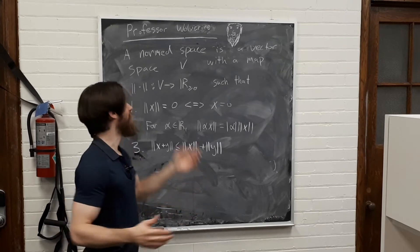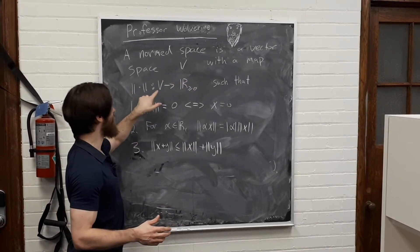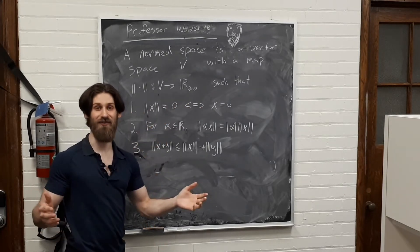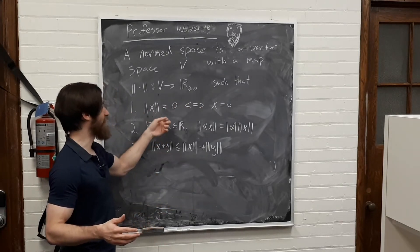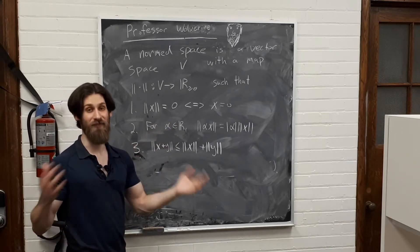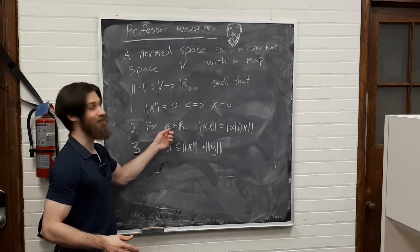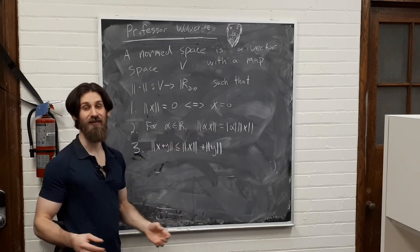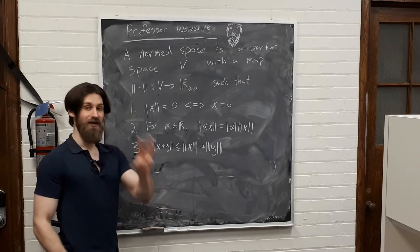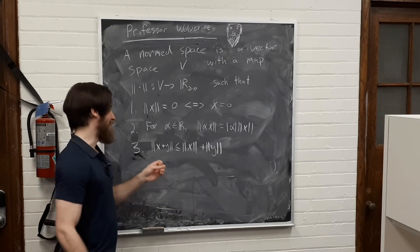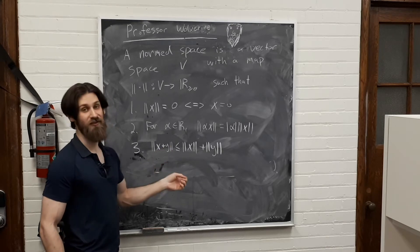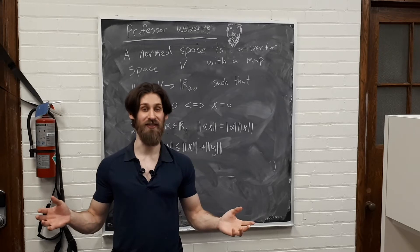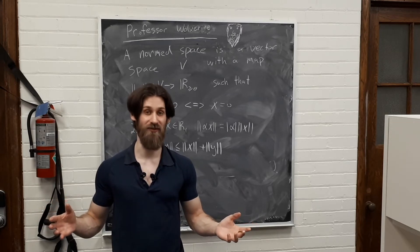So a norm space is a vector space V with a map from V to the non-negative real numbers such that if X is an element of your vector space and the norm of X is zero, this is equivalent to X being the zero vector. In addition, if alpha is a real number, then the norm of alpha times X is just the absolute value of alpha times the norm of X. And the third condition is the triangle inequality. It says that the norm of X plus Y is less than equal to the norm of X plus the norm of Y. These are all things that hold in usual Euclidean space, in particular for the real numbers where the norm is just the absolute value.